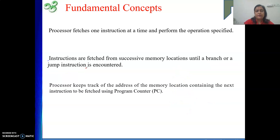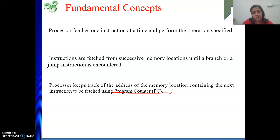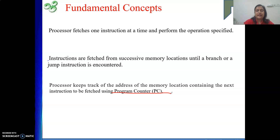Who helps us keep track of the address of instruction locations? For that we have one dedicated register — the Program Counter. The program counter keeps track of the memory address of the instruction we need to execute next. This is also a dedicated register. Additionally, the PC holds the address of the next instruction to be executed, while the Instruction Register (IR) holds the instruction that is currently being executed. That is the job of the instruction register.